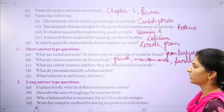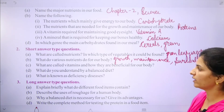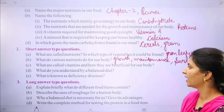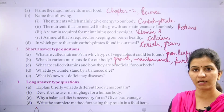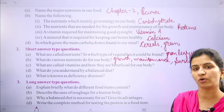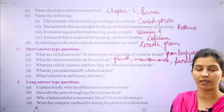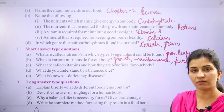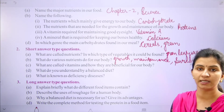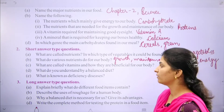What is known as deficiency diseases? What are vitamins and how are they beneficial for our body? Vitamins are nutrients required in our body. If there is a deficiency of vitamins, there can be many diseases. Vitamin A is for good eyesight, vitamin B is for our nerves, and vitamin C is for our bones, teeth, and gums.